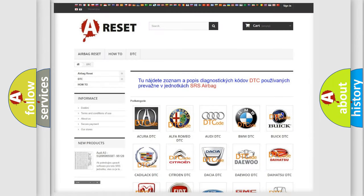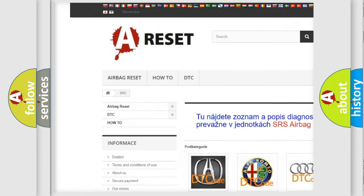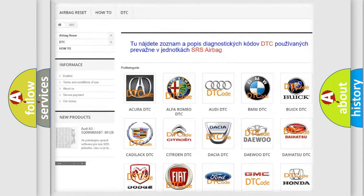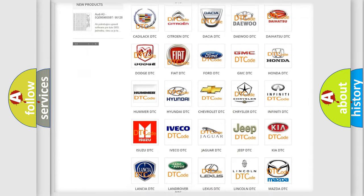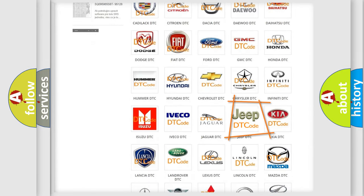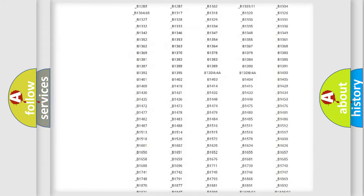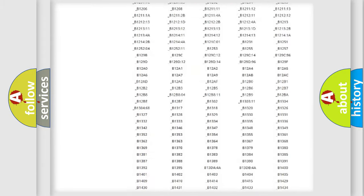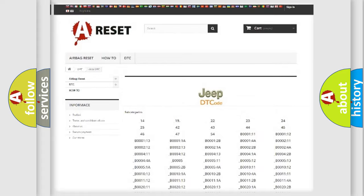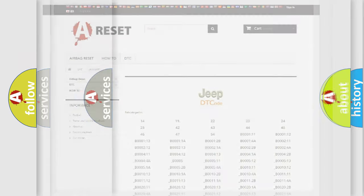Our website airbagreset.sk produces useful videos for you. You do not have to go through the OBD2 protocol anymore to know how to troubleshoot any car breakdown. You will find all the diagnostic codes that can be diagnosed in Jeep vehicles, and also many other useful things.